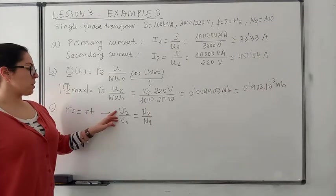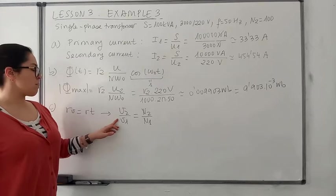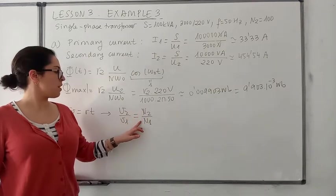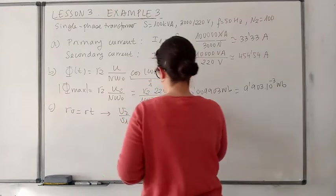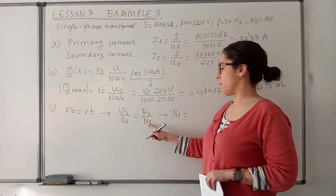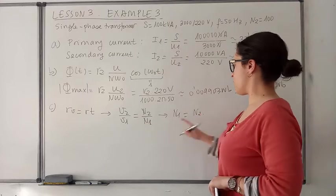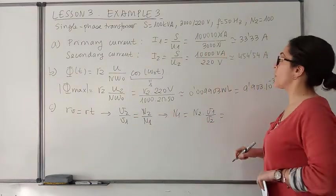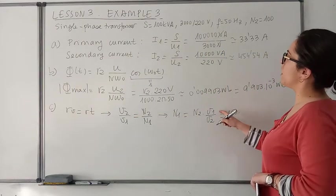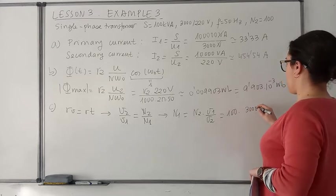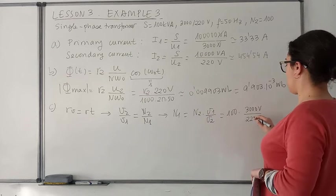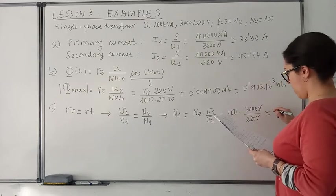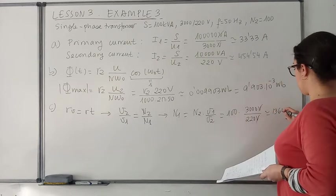The voltage in the secondary circuit divided by the voltage in the primary circuit must be the same as the number of turns in the secondary winding divided by the number of turns in the primary winding. So if you want the number of turns in the primary winding, you will have the number of turns in the secondary winding multiplied by the voltage in the primary circuit divided by the voltage in the secondary circuit. That is 100 multiplied by 3000 V divided by 220 V, so the number of turns is approximately 1364 turns.